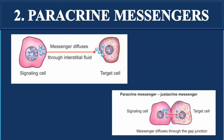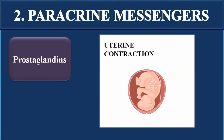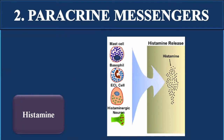Examples of paracrine messengers include prostaglandins and histamine. Prostaglandins function as paracrine messengers and are involved in uterine contraction. Histamine is released by different types of white blood cells, especially during allergic reactions, and its main function is to cause vasodilation of blood vessels.